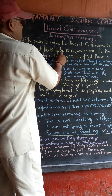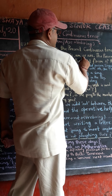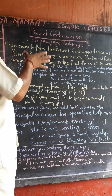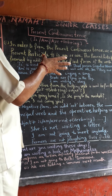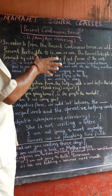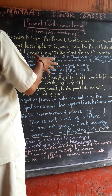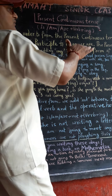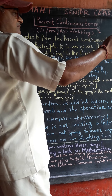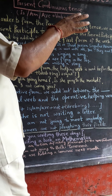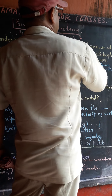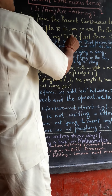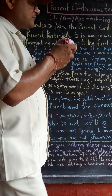In order to form the present continuous tense, we add the present participle to is, am, or are. The present participle is formed by adding 'ing' to the first form of the verb.